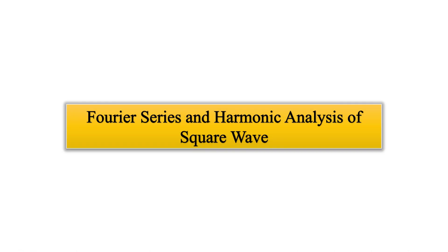Hi everyone, welcome back to TechnoLabs. Have you ever wondered how a simple clean sine wave can create something as sharp as a square wave? It sounds impossible. Well, today I'm going to reveal the magic behind it using one of the most important concepts in mathematics and engineering: the Fourier series. In this video we will learn what a Fourier series is, how we can calculate the coefficients a-naught, aₙ, and bₙ, and how we can use harmonic analysis to build a square wave step by step. This video is packed with visualizations and simple explanations, so whether you are a student, engineer, or just curious about signal processing, you are in the right place. Let's get started.